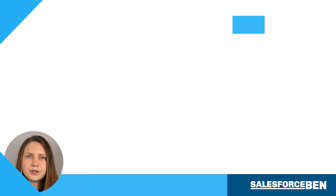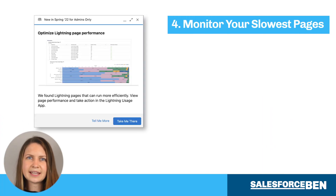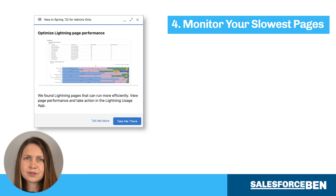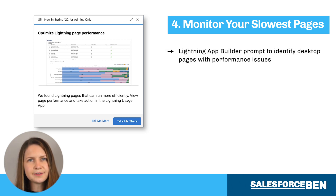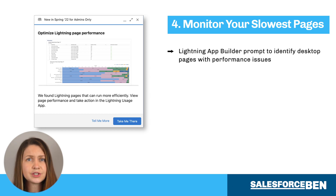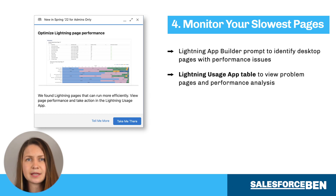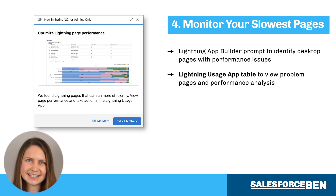We all know that Salesforce pages, when they take too long to load, can have a serious impact on user adoption. A new prompt in the Lightning App Builder will identify desktop pages with performance issues and direct you to the new Lightning Usage App Table, where you can view the problem pages and performance analysis.